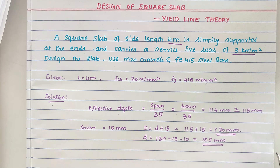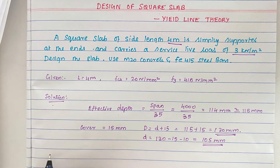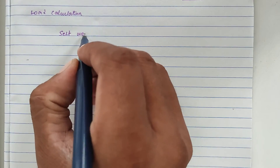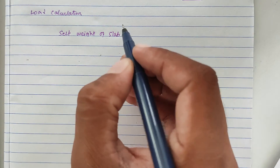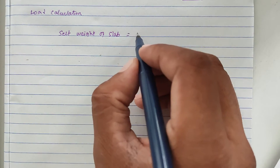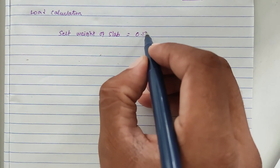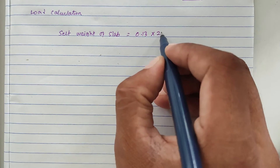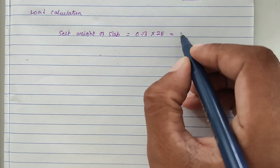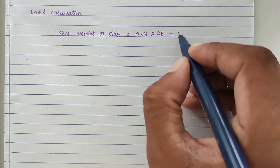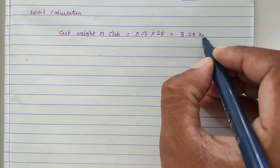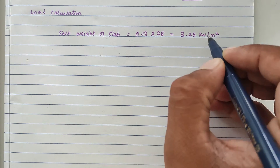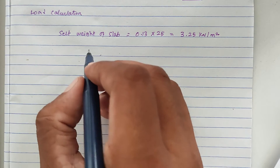Now we calculate the loads. The self-weight of the slab equals 0.13 (depth in meters) multiplied by 25 kN/m³, giving 3.25 kilo Newton per meter square. The finishes load is taken as 1.10 kilo Newton per meter square.